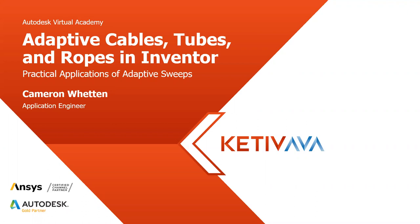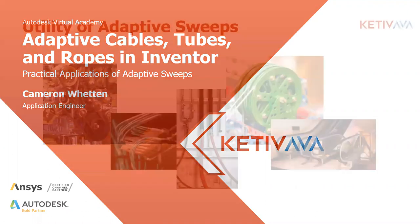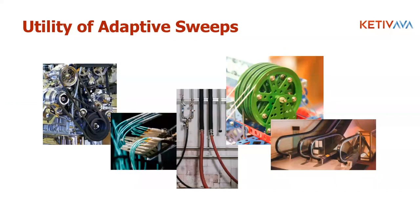Here are a couple of examples of geometry that can be created as sweeps — other examples would include rigid and flexible electrical conduit, hydraulic and pneumatic hoses, hanging ropes and cables, etc. Adding adaptivity to the sweeps gives them the power to update themselves as the overall design changes. For example, a belt passing over a series of pulleys and idlers can adjust itself if the pulleys' positions are changed, saving valuable time over manually adjusting the belt geometry each time.